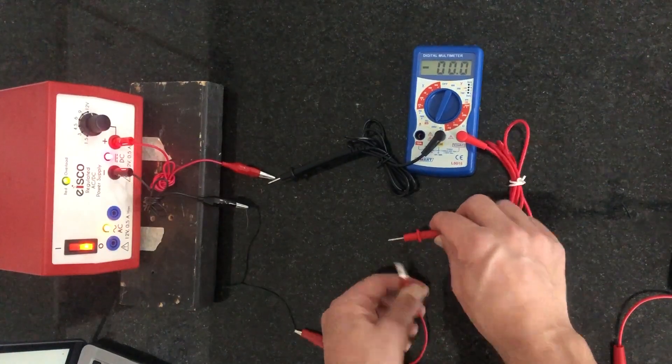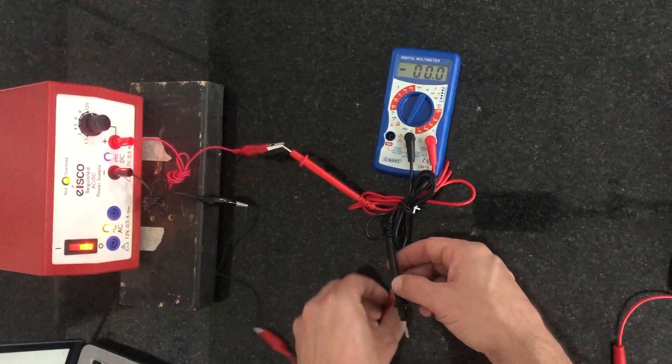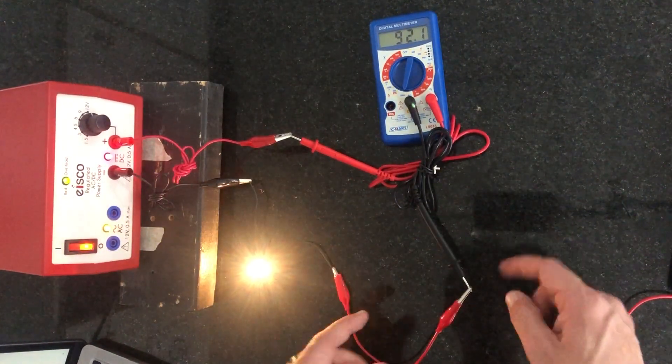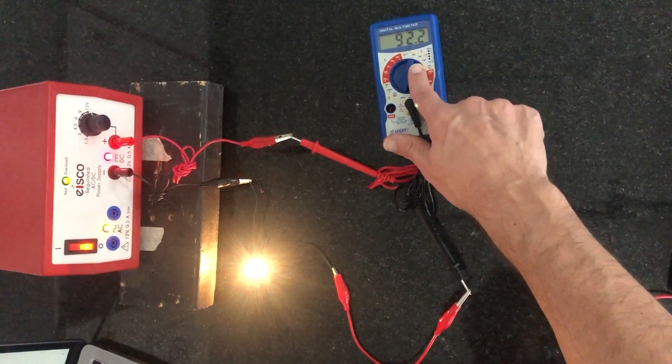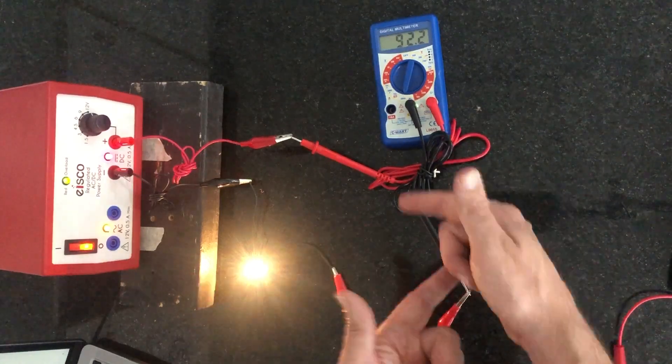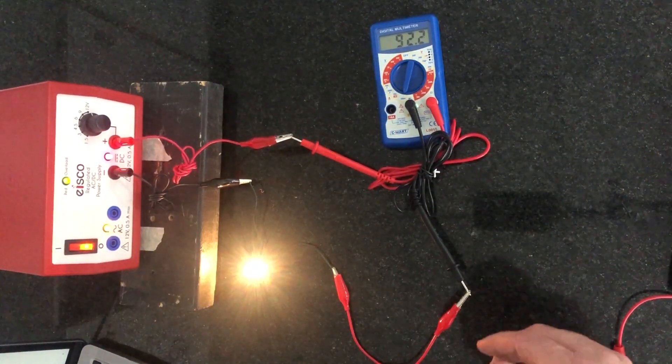And if I was just to switch them like this, then I would have a positive voltage, sorry, a positive current here. So if you get a negative sign, all you have to do is flip it or just don't put the negative sign in when you are recording your data.